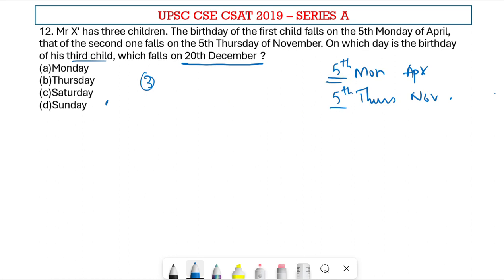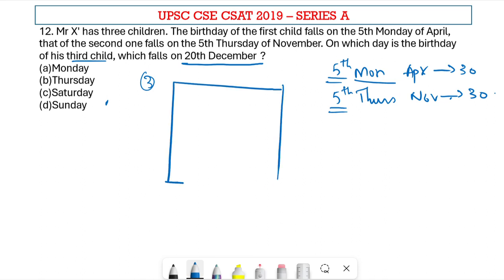It is important to notice a fact that for any day to repeat for the 5th time in a month that has 30 days, there are only two possibilities. The first possibility will be when the first day of the month is — let's take April for this example — the 1st of April is a Monday.